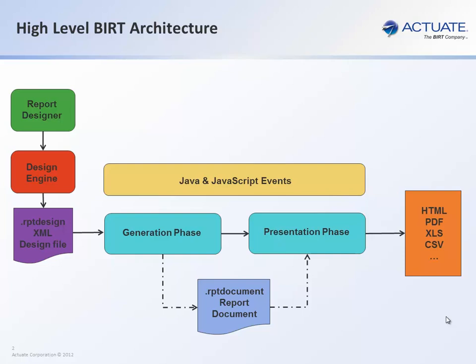Once a report is complete and you need to generate it, the BERT engine uses the generation phase to create the RPT document. This is the report output. Once a report document is created, the BERT engine will use the presentation phase to create the specific output, whether it's HTML, PDF, or others. This is done using the emitters.